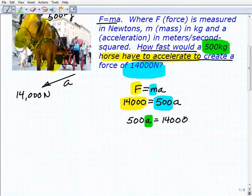We're going to have to use an inverse operation. Because this is multiplication, because this is 500 times a, we're going to have to divide both sides of the equation by 500. We'll get a is equal to 14,000 divided by 500. If you haven't done that already, you want to go ahead and grab your calculator. 14,000 divided by 500 is equal to 28.